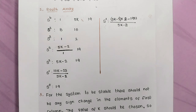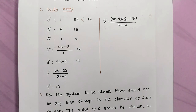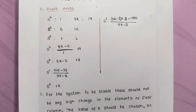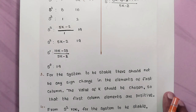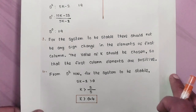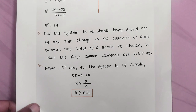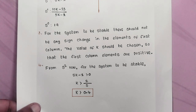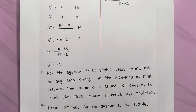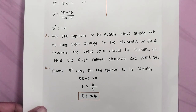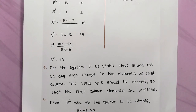Fourth step: from the s² row, the first element is 5k − 2, which must be greater than 0. So 5k > 2, meaning k > 2/5, which is k > 0.4. This gives us the first condition: k must be greater than 0.4.